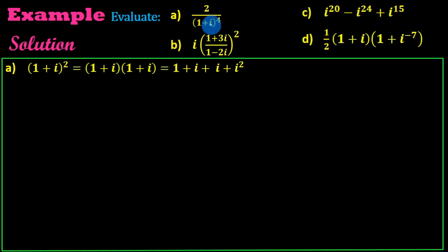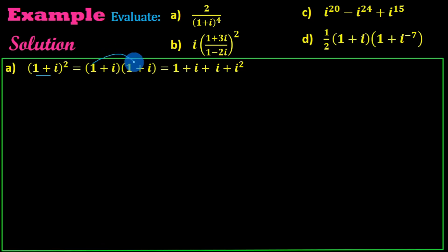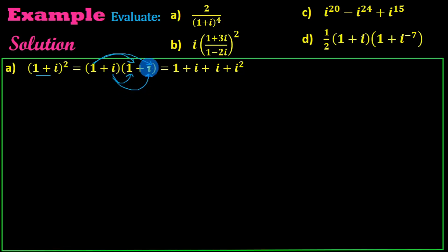One plus i times one plus i — that is one plus i the whole square, times one plus i the whole square. So one plus i to the power of 4 equals one plus i squared, times one plus i squared. Let me compute one plus i the whole square.